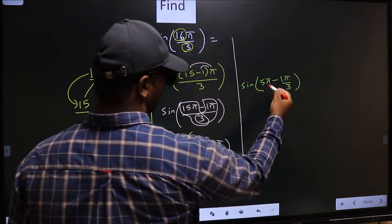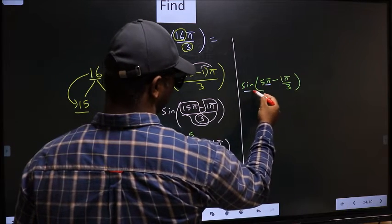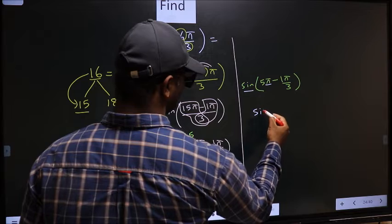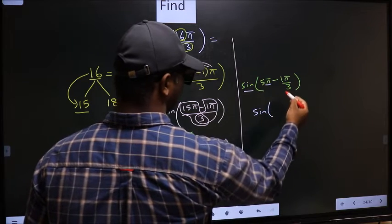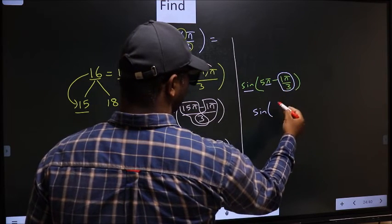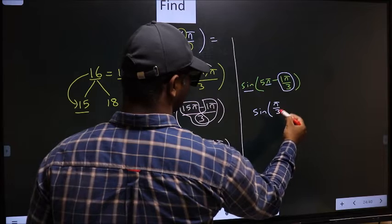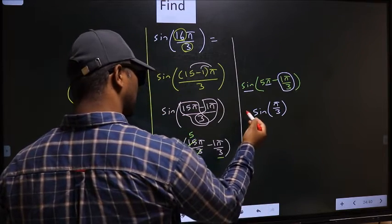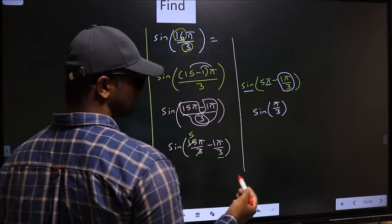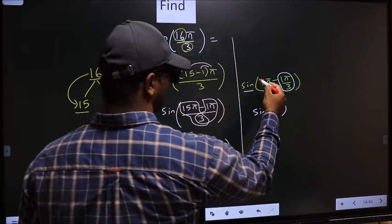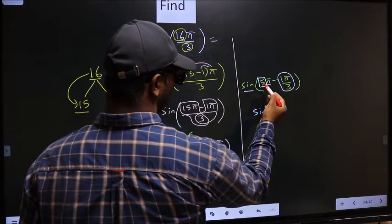Next, here we have π, so sin is not going to change. It will remain sin of this angle we get, π by 3. Now the question arises, will we get here plus or minus? To answer that, you look at this number 5.